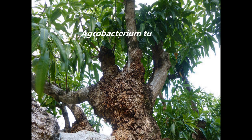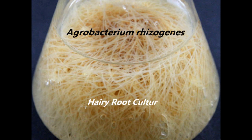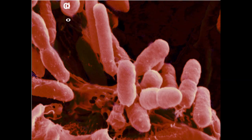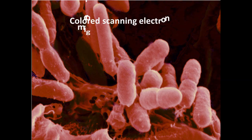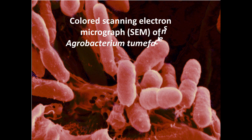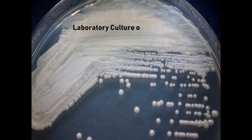Scientists have also engineered it to infect monocots. Whereas rhizogenes induces hairy roots in infected plants. This slide shows hairy roots in a laboratory culture. Look at the morphological appearance of Agrobacterium tumefaciens cells under scanning electron microscopy. Here you can see how an agrobacterial colony really looks — colony morphology in laboratory culture grown on LB agar media.